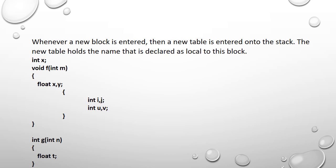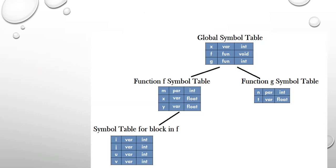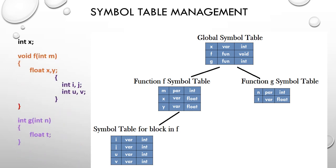A block written inside function f is valid only for a certain duration. For the given code, we maintain a global symbol table storing information about variable x, function f, and function g. This global symbol table has three columns: the identifier name, its type, and the kind of identifier. So x is of integer type (variable), f is a void function, and g is an integer function.